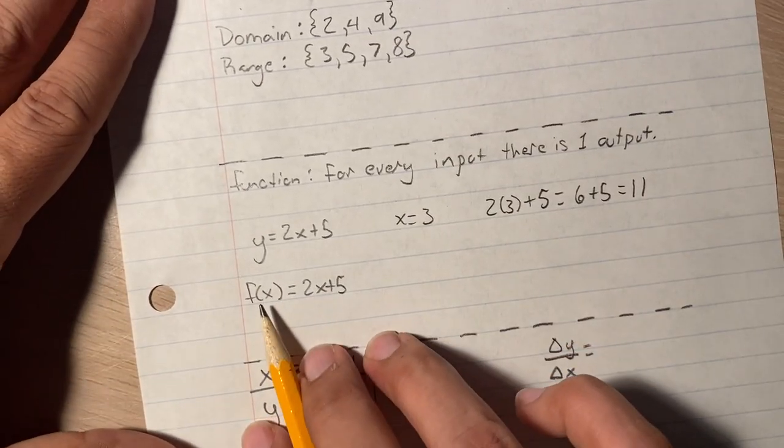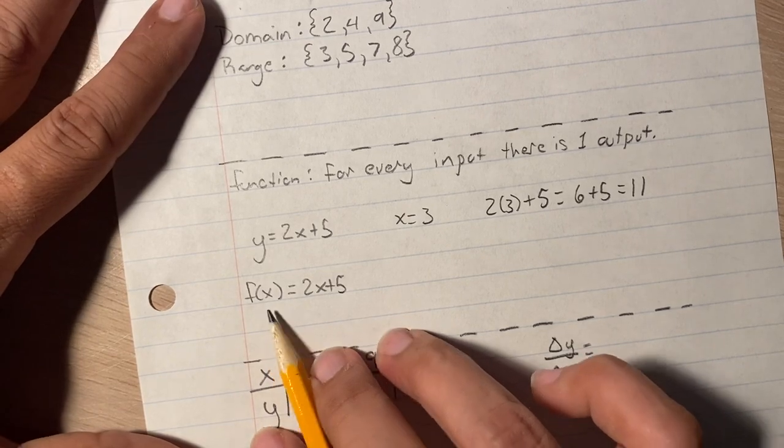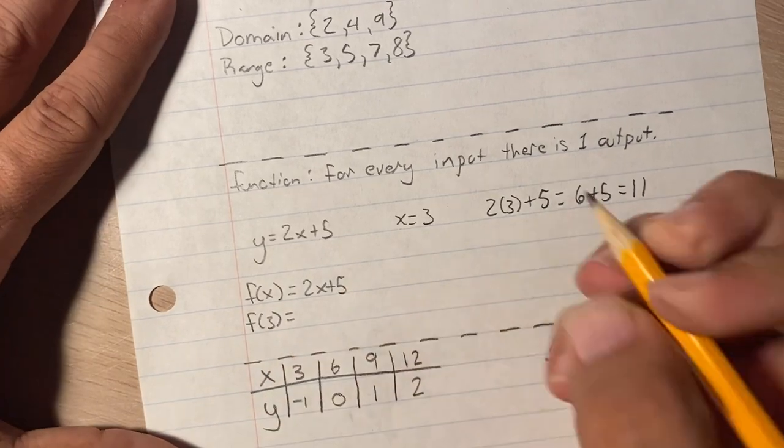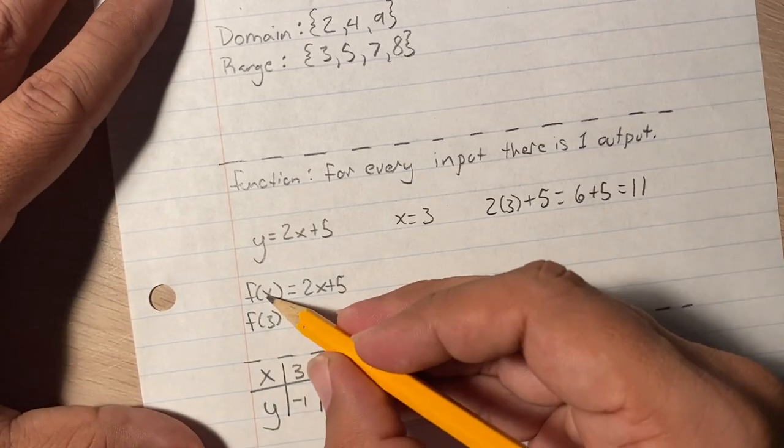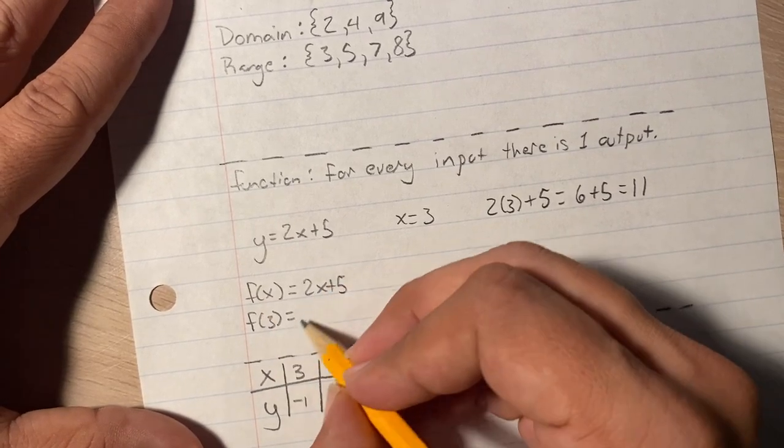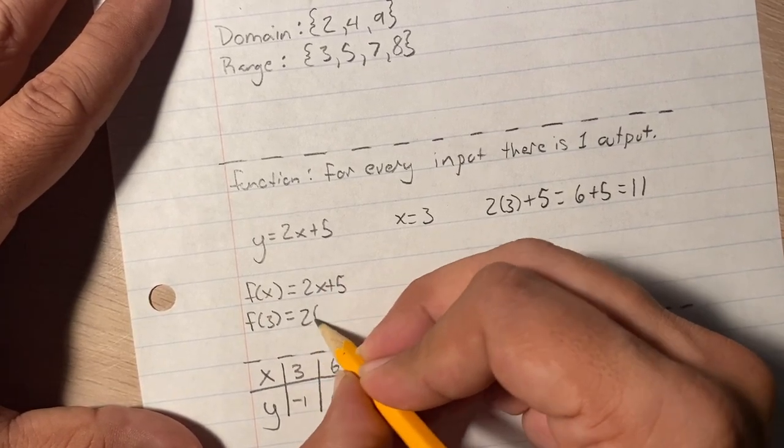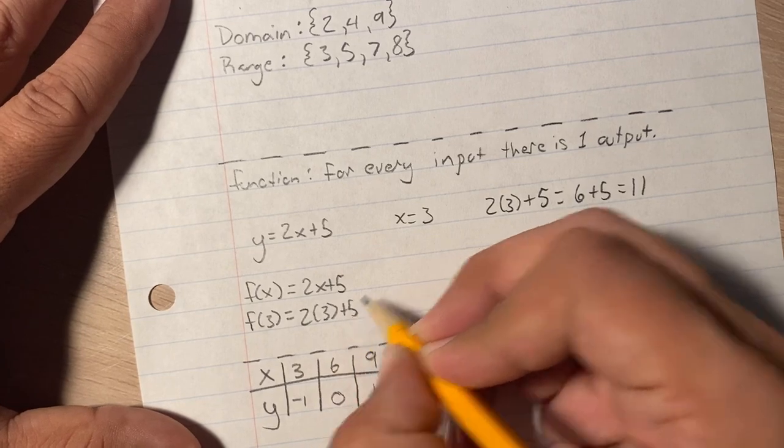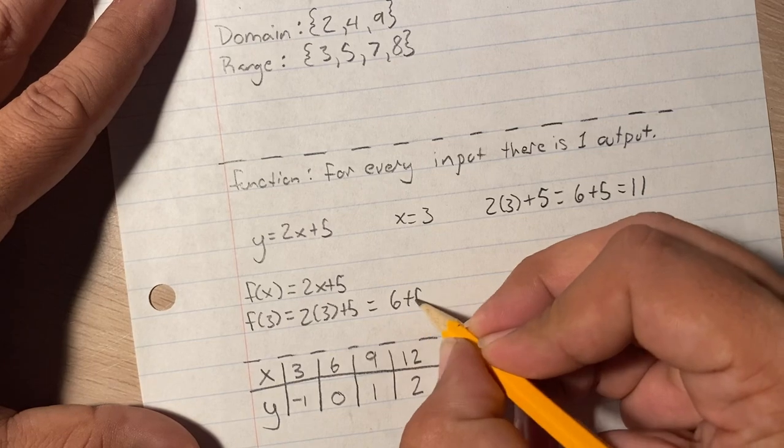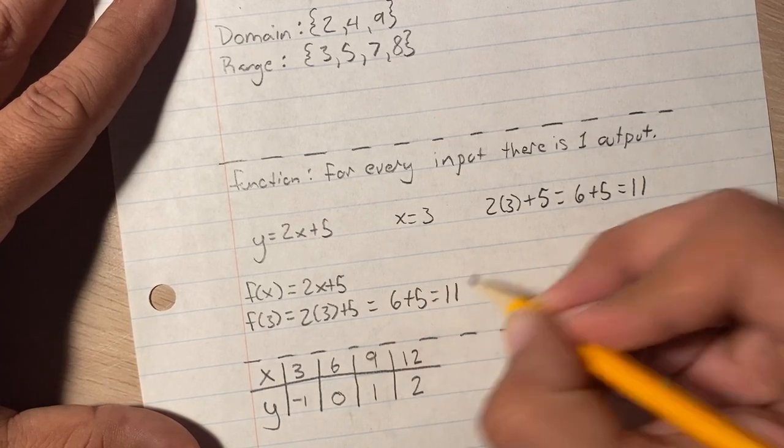Now, we're going to do this one. If I wanted to tell you that x equals 3, and I want you to solve for it, all I have to do is write f of 3 equals. And that automatically tells you to replace the x with 3 in this function. So it would be 2 times 3 plus 5, which is the same thing as 6 plus 5, which is the same thing as 11.